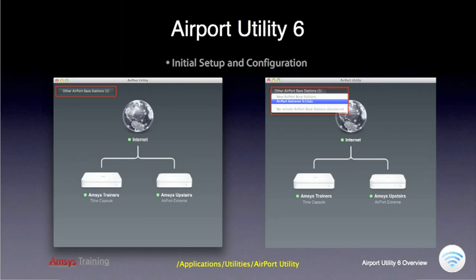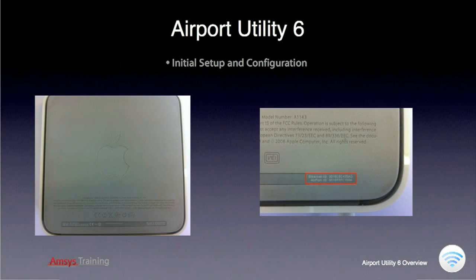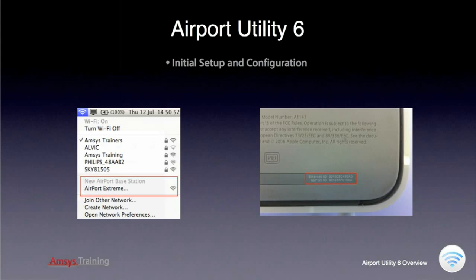To find new Base Stations to configure, select the Other Airport Base Stations option in the top left of the utility and select the MAC address that relates to your new Base Station. To find the MAC address of your Apple Base Station, find the label on the underside of your device — there should be a 12-digit ID labelled Airport ID. The last six digits of this Airport ID should relate to the new Base Station offered by the Airport Utility. You can also select the default name of the new Base Station from your Wi-Fi menu, which would load up the Airport Utility for you.